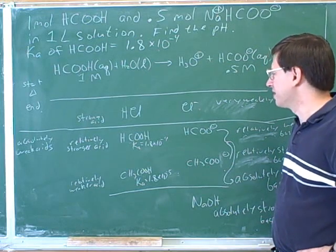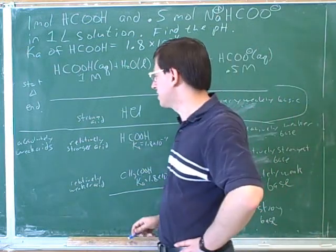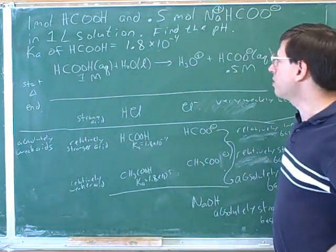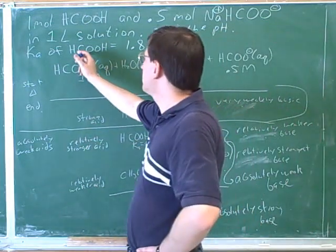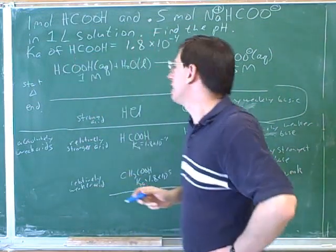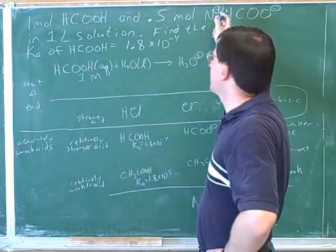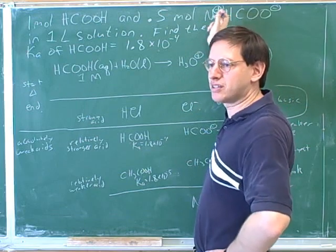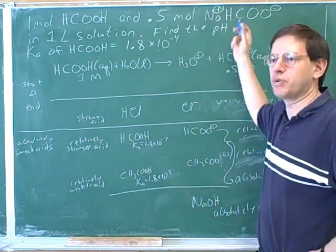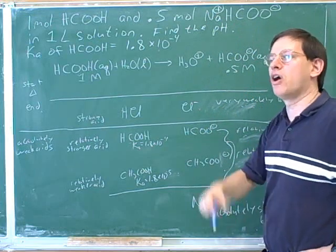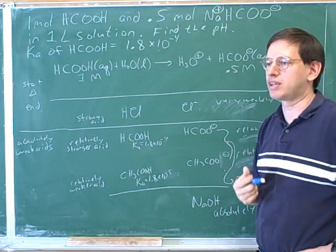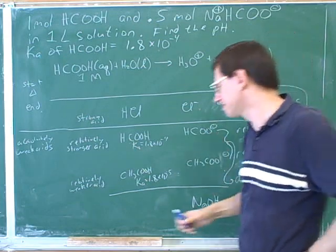Most people are very confused about this because they don't realize that 'acidic' and 'basic' are used in both absolute and relative senses. We knew that this was an absolutely weak acid, so its conjugate must be an absolutely weak conjugate base, and this reaction is going to go to equilibrium. Weak acids always have weak conjugates in absolute terms, and weak bases always have weak conjugate acids in absolute terms.